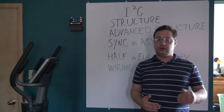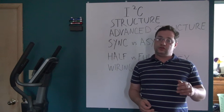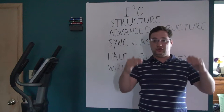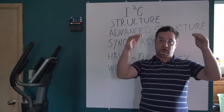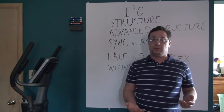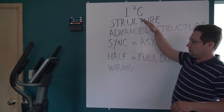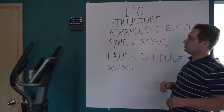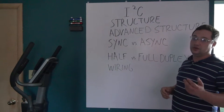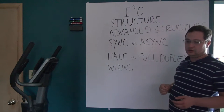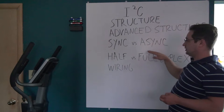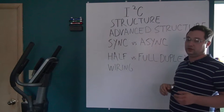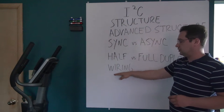I2C is fundamentally different from UART. The only thing that I2C and UART have in common is that they use the same kind of digital levels — low means zero and high means one. We're going to talk about the structure of I2C, including synchronous versus asynchronous, half-duplex versus full-duplex, and the wiring.